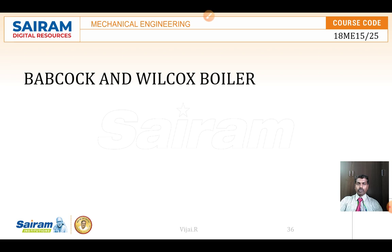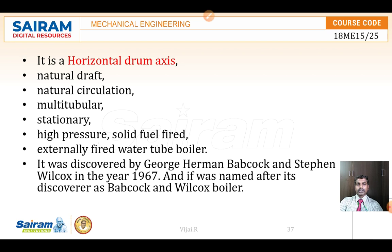The Babcock and Wilcox boiler has a horizontal drum axis and it is a natural draft, natural circulation boiler. The fluid flows naturally because of the density difference between the hot and cold fluid — that is called natural circulation. If you use a pump or motor then it will be a forced circulation, but in this case it is a natural circulation boiler. It is also a multi-tubular boiler and a stationary boiler with a horizontal drum.